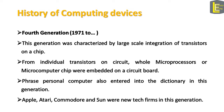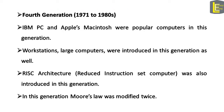The fourth generation of computers starts from 1971. This generation was characterized by large-scale integration of transistors on a chip. From individual transistors on a circuit board, whole microprocessors or microcomputer chips were embedded on a circuit board. The word personal computer also entered the dictionary in this generation. New tech companies in this generation were Apple, Atari, Commodore, and Sun. Popular computers were the IBM PC and Apple's Macintosh. Large computers, also known as workstations, connected to multiple terminals, were also introduced. The computer's internal instruction set was modified, and RISC — Reduced Instruction Set Computer — architecture was also introduced.